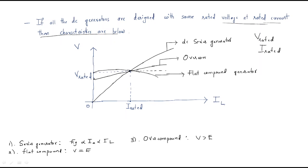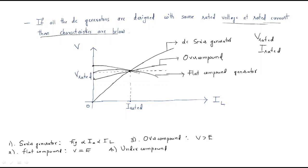Next, the under compound generator. It starts at a certain point and the voltage increases only very slightly with load current. So this is the under compound generator.